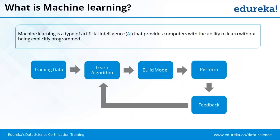Machine learning works with the ability to learn without being explicitly programmed. In regular programming, you exactly specify input and output. But in machine learning, as data comes in, the system adjusts itself to reality and behaves accordingly. That is the dynamic nature of machine learning and artificial intelligence.